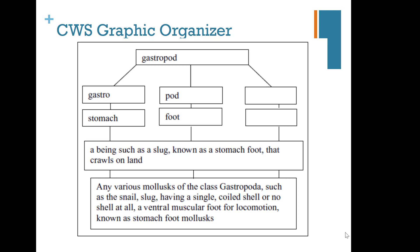The study used a graphic organizer to help students break down word meaning. The word 'gastropod' is broken into morphemes: 'gastro' (meaning stomach) and 'pod' (meaning foot) — so a gastropod is a being such as a slug known as a stomach foot that crawls on land. The reference material confirms: any of various mollusks of the class Gastropoda, such as the snail or slug, having a single coiled shell or no shell at all, with a ventral muscular foot for locomotion — known as stomach-foot mollusks.